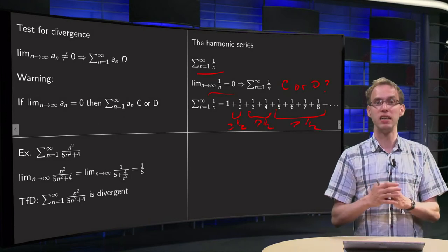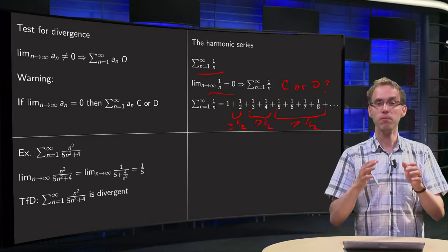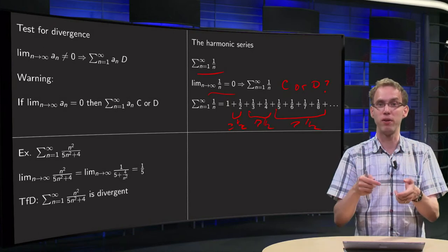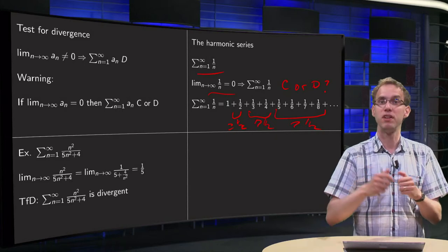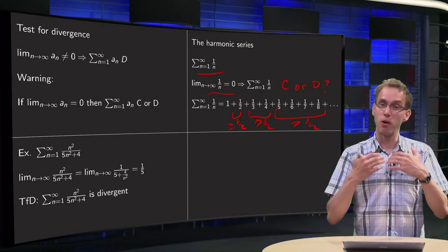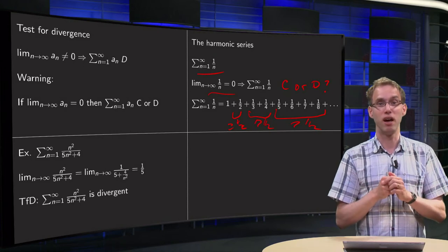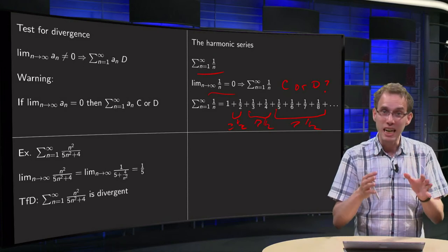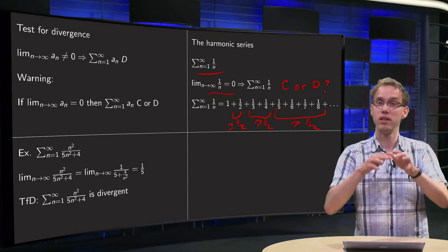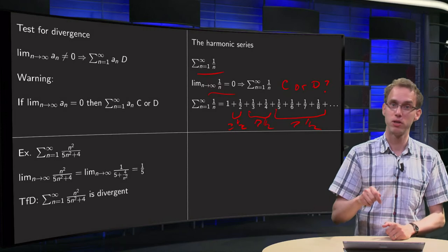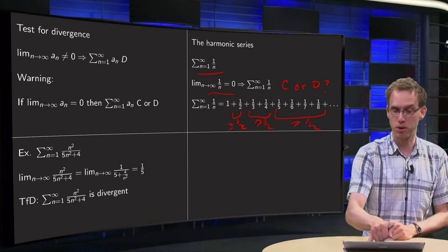And we can go on like this. So we add stuff which is always bigger than 1 over 2. We do that infinitely many times, so our series is going to blow up. The series in fact diverges. So even though the terms tend to zero, the sum of the terms still blows up, goes to infinity.